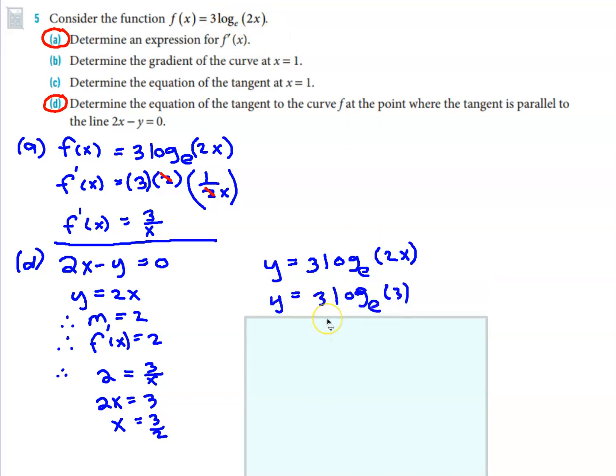Okay, so 3 halves multiplied by 2 is just 3. So there's the value for y. And, of course, the equation of a straight line is y equals mx plus c. So that goes in place of y. The gradient is 2 from over here, so m equals 2. And the x coordinate is 3 halves.